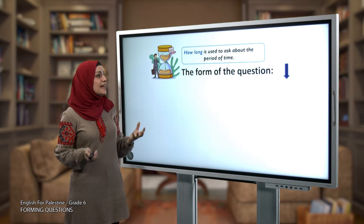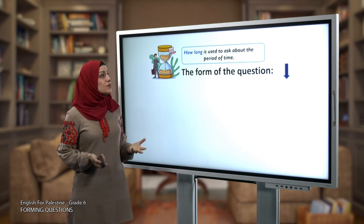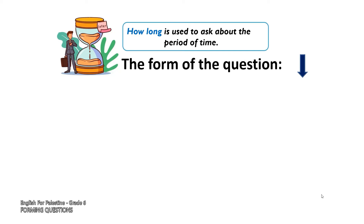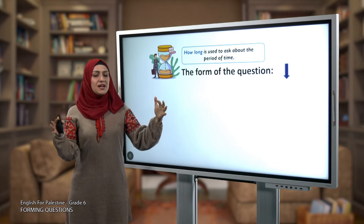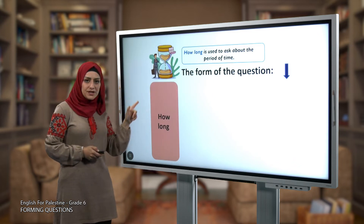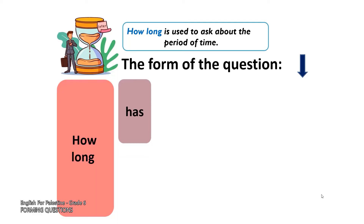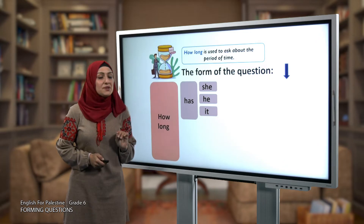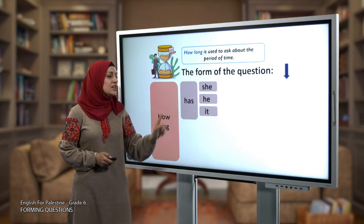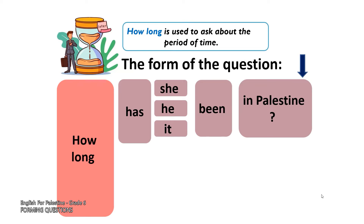Now, how do we form questions using the present perfect and 'how long'? 'How long' is used to ask about the period of time. To form a question, first use 'how long,' then use 'has' if the subject is 'he,' 'she,' or 'it' — always remember, for singular subjects use 'has.' After that, put verb three. For example, verb three of 'be' is 'been.' Always put a question mark at the end.